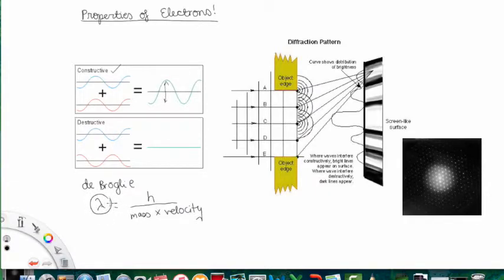For example, if we had a 0.1 kilogram baseball traveling at 35 meters per second, we can simply plug this into this equation to solve for the wavelength.